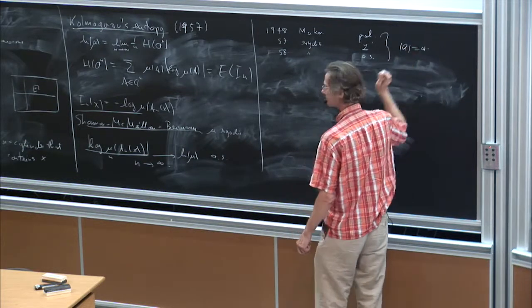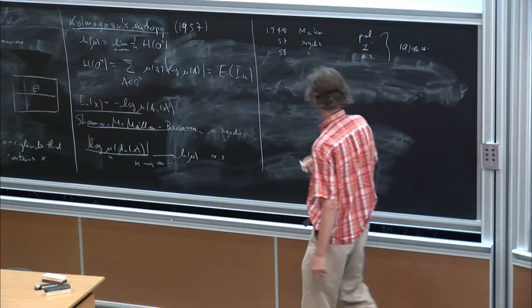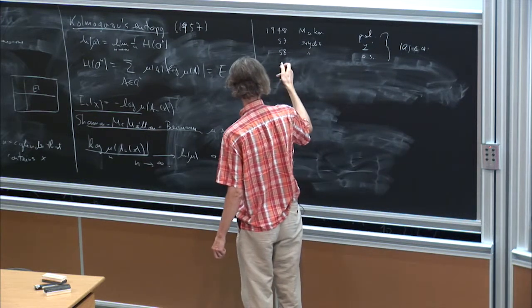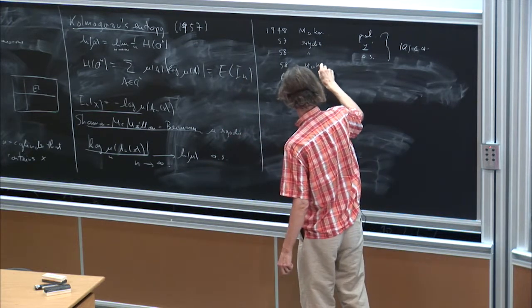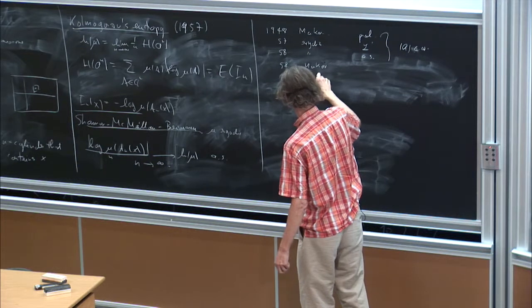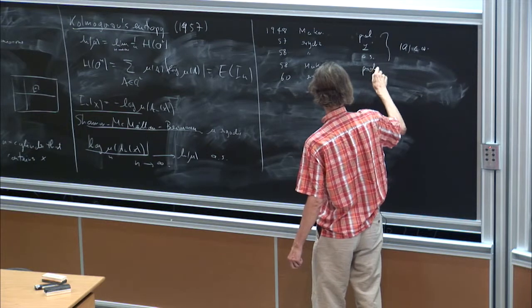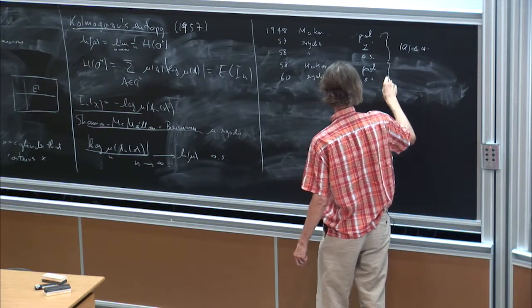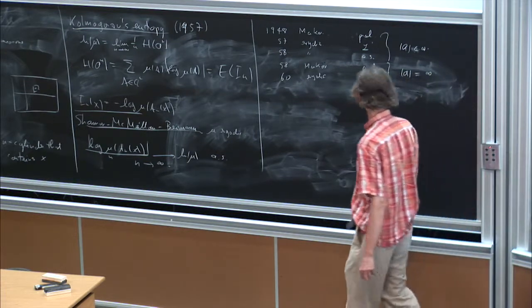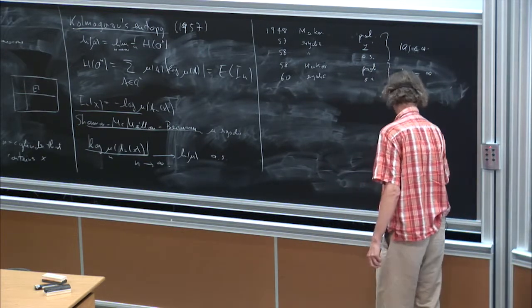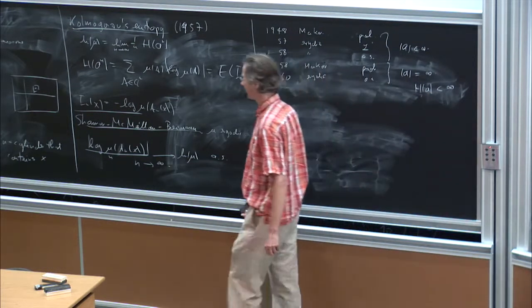For finite partitions. For infinite partitions the same thing was gone through by Chacón and for Markov and then for ergodic measures with the same convergence properties, namely first in probability and then almost surely. So this is when A is countably infinite under the assumption of course that h of A has to be finite, so you have a finite entropy.